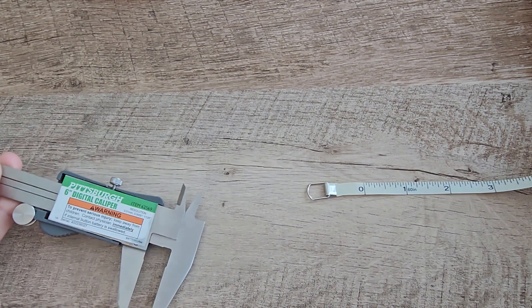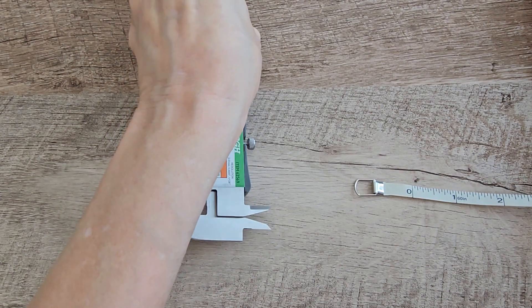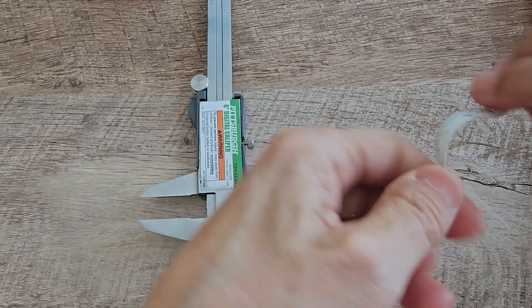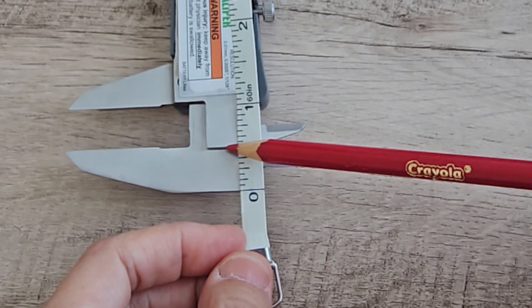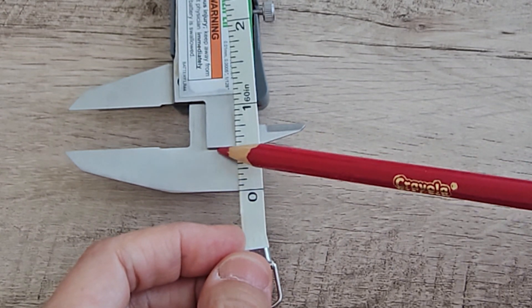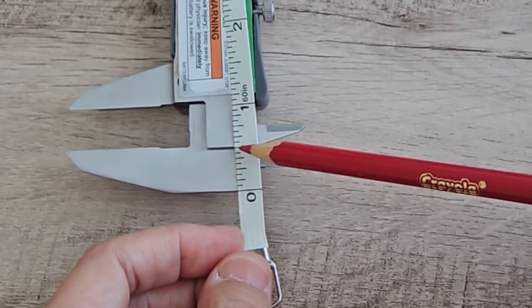And for the step measurement, this is the one that may cause confusion. It's from the bottom to this edge right here. This, basically the step that you see right there. So from here to here.